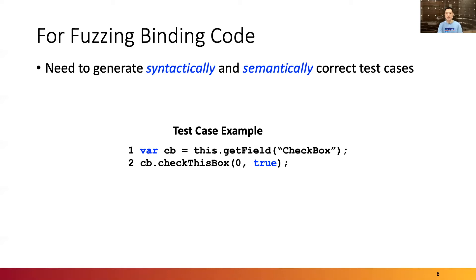For fuzzing binding code, we should generate and execute syntactically and semantically correct test cases. This is because bugs in binding code can only be discovered by executing a series of JavaScript statements. A typical JavaScript test case involves at least two steps: creating an object and setting a property or calling a function of the object. If a test case contains a semantically incorrect statement, the test case has to stop executing and retire. Invalid statements seriously impede the progress of fuzzing.